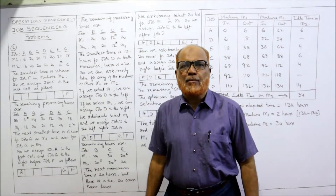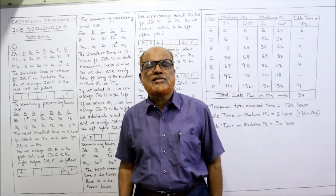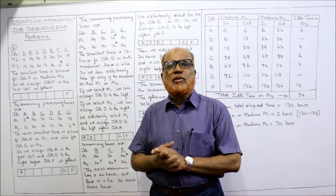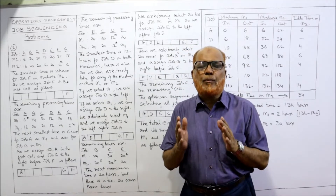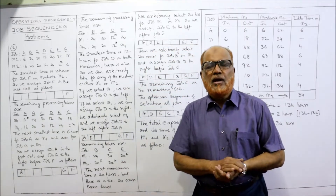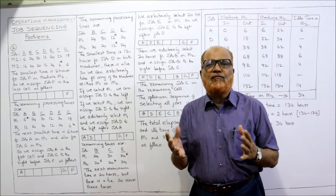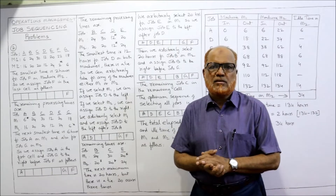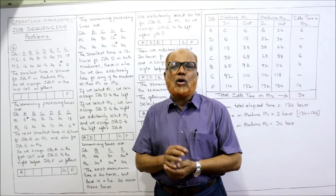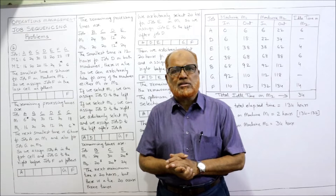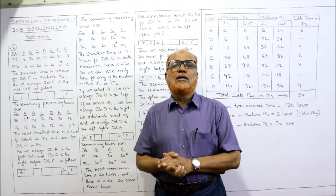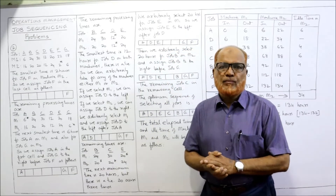Welcome to my channel, I am Hashem Ali Khan. In this video, I'm going to solve the second problem on sequencing. Sequencing problems are those where we have to find out the optimum sequence of completing a number of jobs, where every job passes through different facilities or machines. Johnson and Bellman have given a technique for finding the optimum sequence, which I have explained in the theory videos.